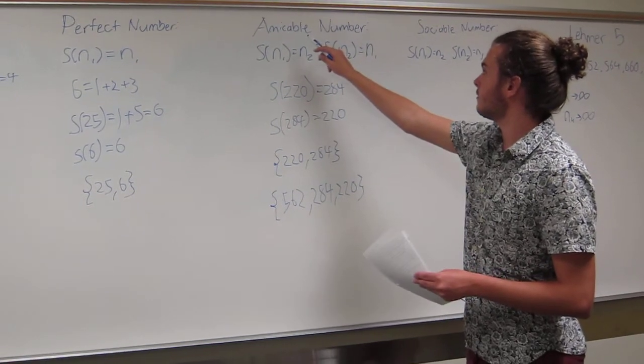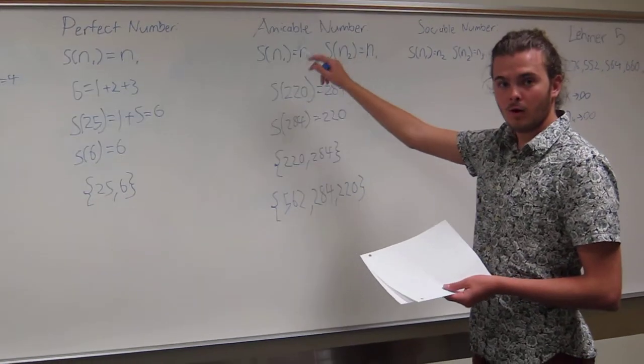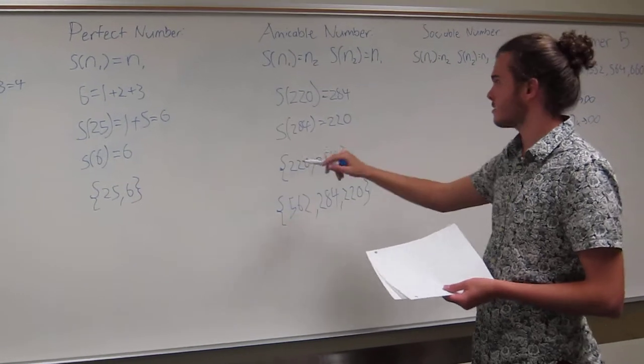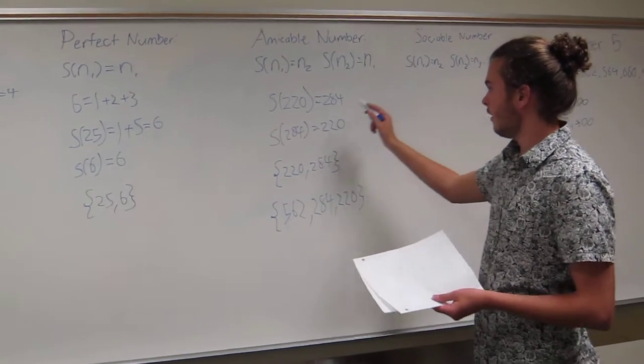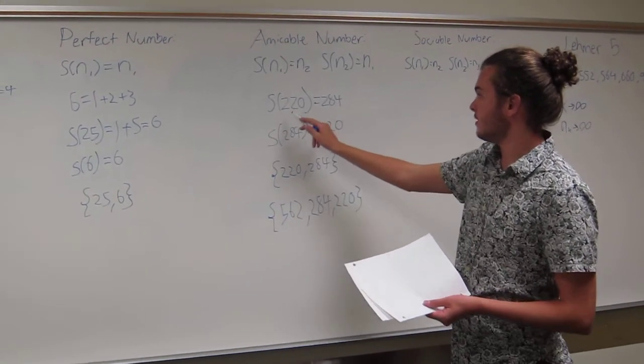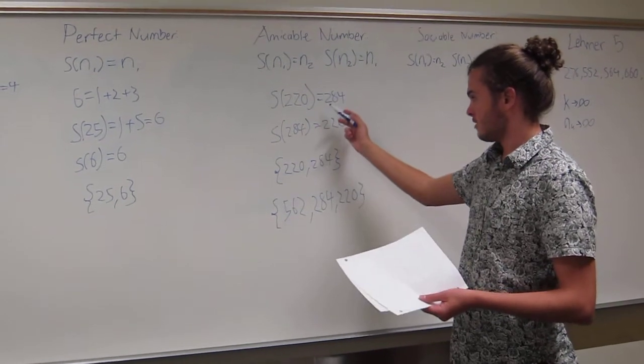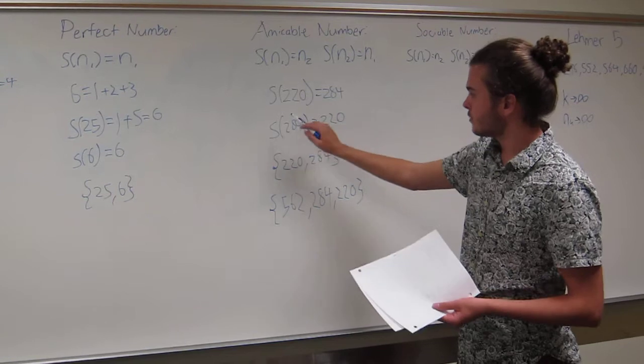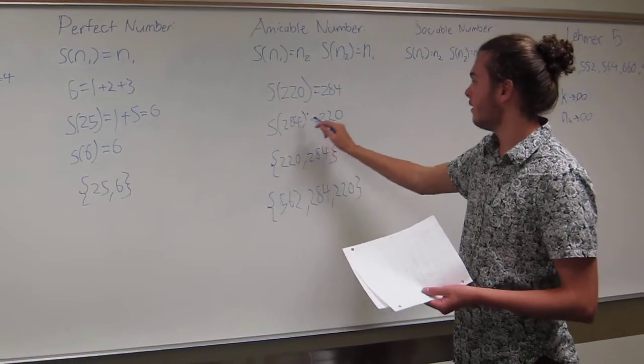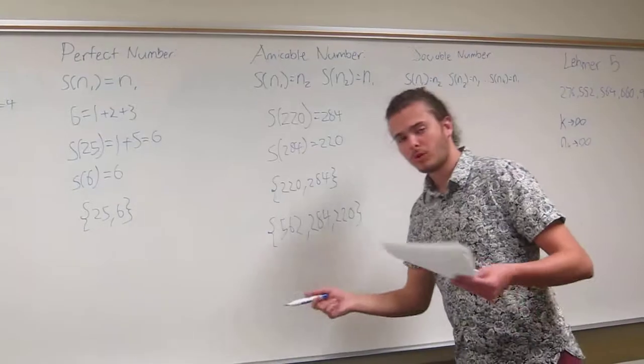And so for an amicable pair, one of those has to be abundant and one of them has to be deficient. For example here, the abundant number would be 220 because the sum of the proper divisors is greater than 220. The deficient number would be 284. Sum of the proper divisors of 284 is less than 284. Pretty cool concept.